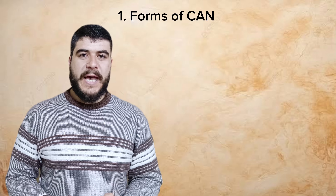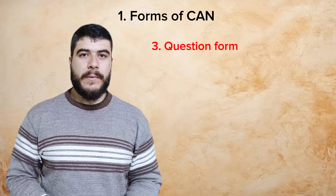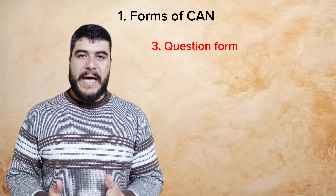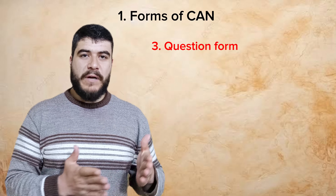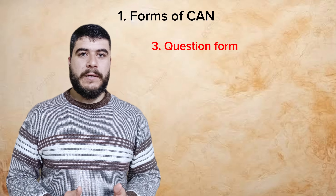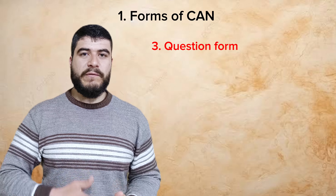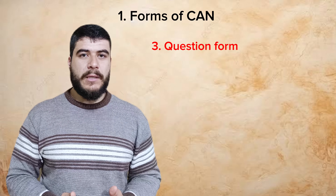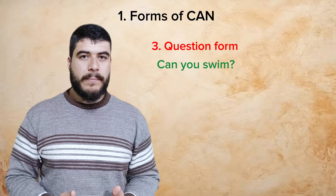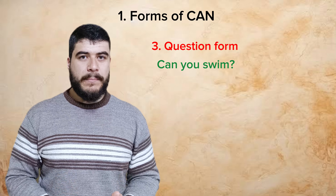The third form of can is the question form. In the question form, we use "can" at the very beginning of the question, before the subject, and after the subject we have the main verb. For example: "Can you swim?"